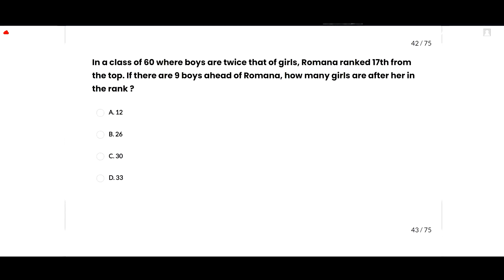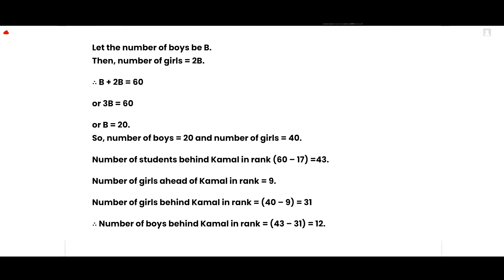In a class of 60 where boys are twice the number of girls, Romana ranked 17th from the top with 9 boys ahead of her — how many girls are after her? Let boys = b and girls = 2b (wait, boys are twice girls, so boys = 2b, then 3b = 60, b = 20 boys and 40 girls). Students behind Romana: 60 − 17 = 43. Girls ahead of her: 9 (since 9 boys ahead means... actually girls behind = 40 − 9 = 31, boys behind = 43 − 31 = 12). Option A is correct.